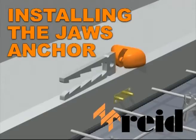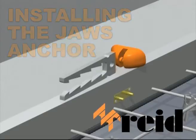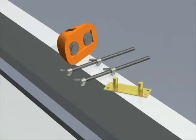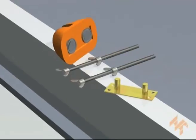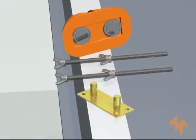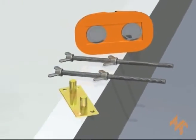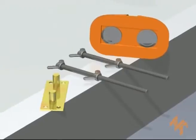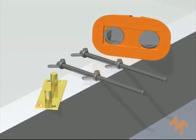This video outlines our recommendations for installing the Reed Jaws anchor. The void former may be fixed to the side form with the support plate, or the setting bolts, or alternatively the magnetic void former for fixing to steel forms.